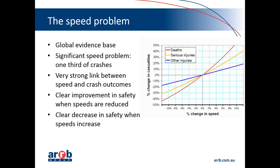There's a very strong link between changes in speeds and crash outcomes. For any given road, if speeds are increasing and nothing else changes in terms of the infrastructure, we do tend to see an increase in risk. And on the other side of that, if there's a reduction in speeds, then we tend to see an improvement in safety.